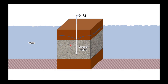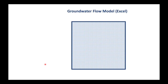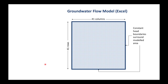Let's imagine that our island is perfectly square and that the water can come and go as it wants from the surrounding water body. It's a square aquifer, so our model has a length and width which will be identical, and it's made up of lots of little cells. The model we're going to use is made in Excel. It has 41 columns and 41 rows — just over 1,600 cells — and it is completely surrounded by what we call a constant head boundary.